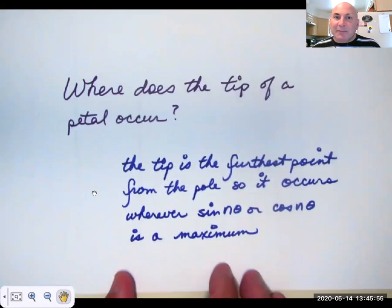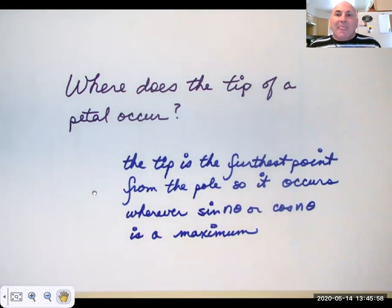So where does the tip of a petal occur? The tip, which is the furthest point from the pole, that occurs wherever sine of n theta or cosine of n theta is equal to 1. Whatever theta value that is, that's where it's going to occur. And the petals will, there will either be n or 2n petals, depending on if n is odd or even. And the petals will be evenly spaced. So if there are 3 petals, they'll be 120 degrees apart. If there are 4 petals, the centers of those petals will be 90 degrees apart.